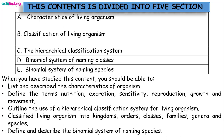When you have completed this content you should be able to list and describe the characteristics of an organism, define the terms nutrition, excretion, sensitivity, reproduction, growth, and movement. You should also be able to outline the use of the hierarchical classification system for living organisms and classify living organisms into kingdom, order, classes, families, genera, and species.